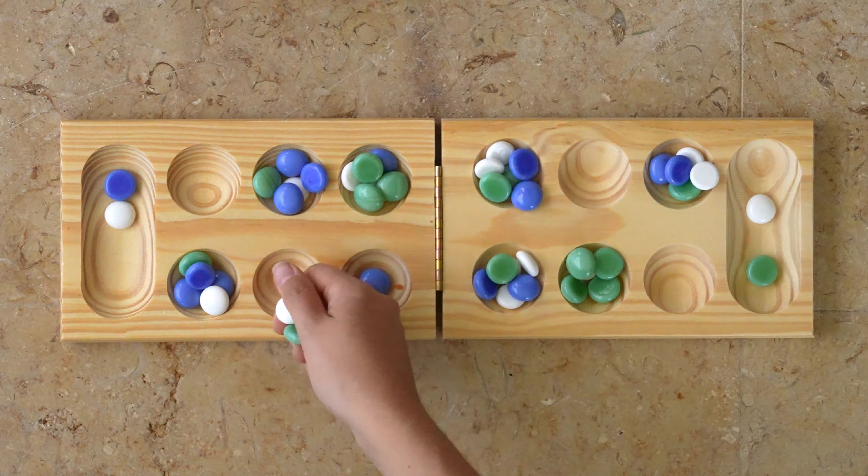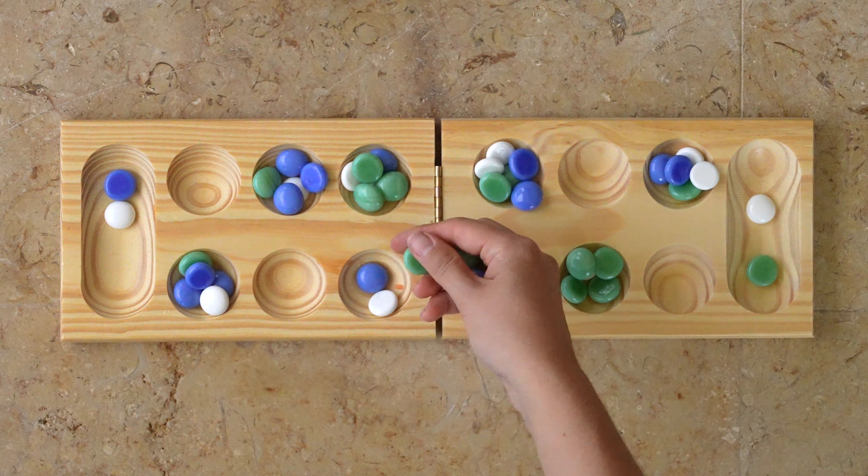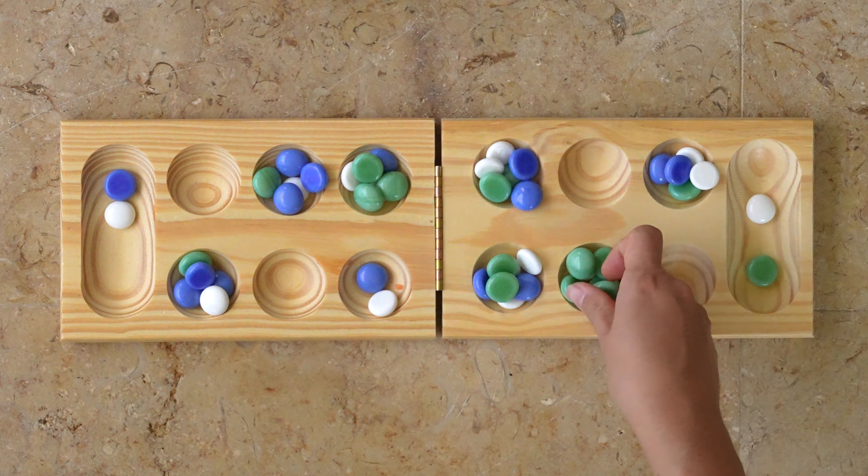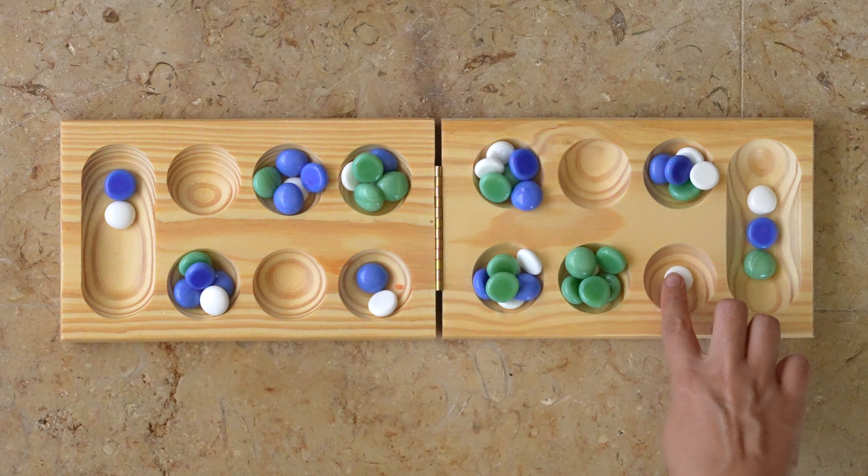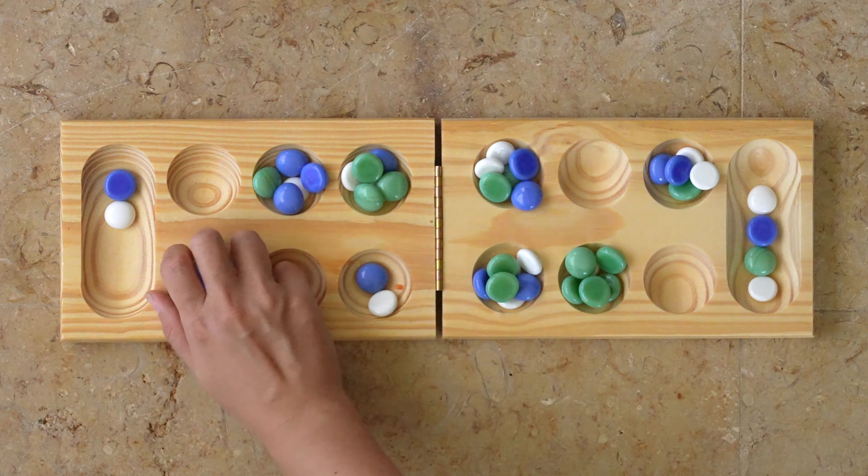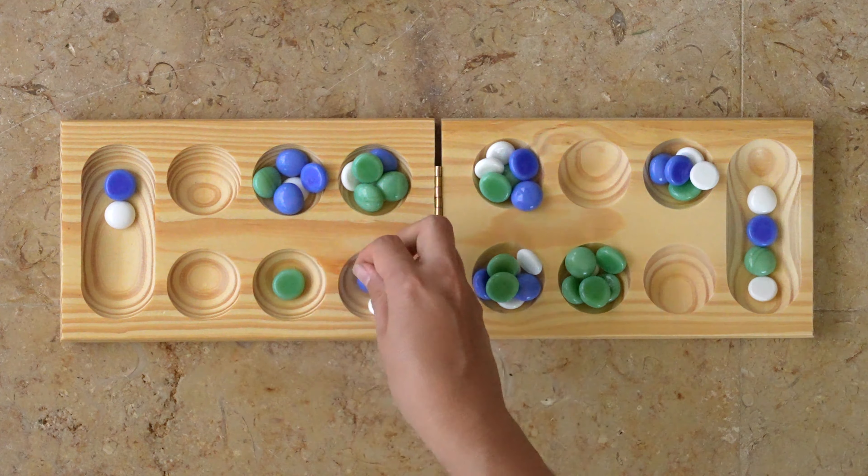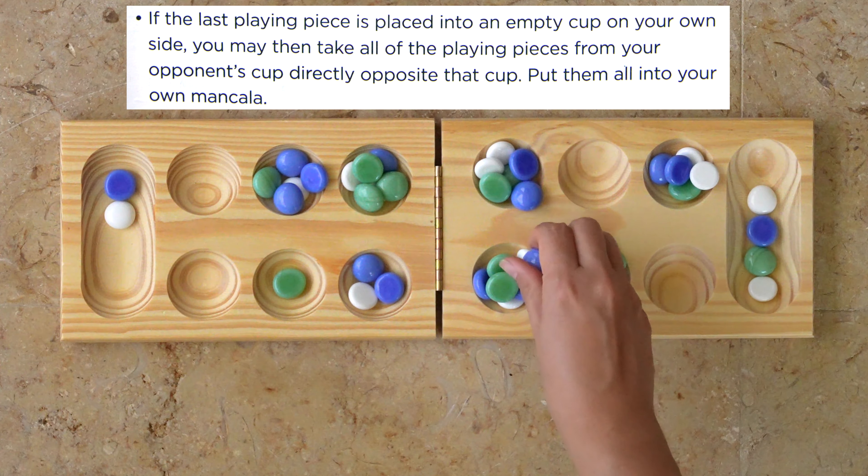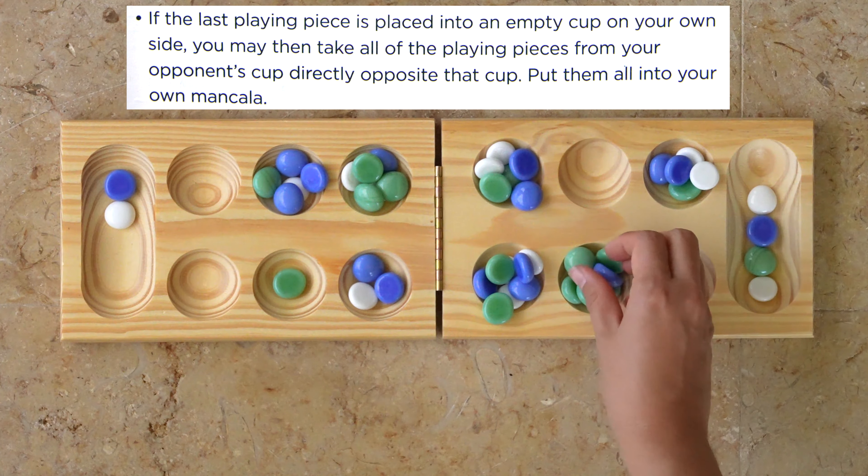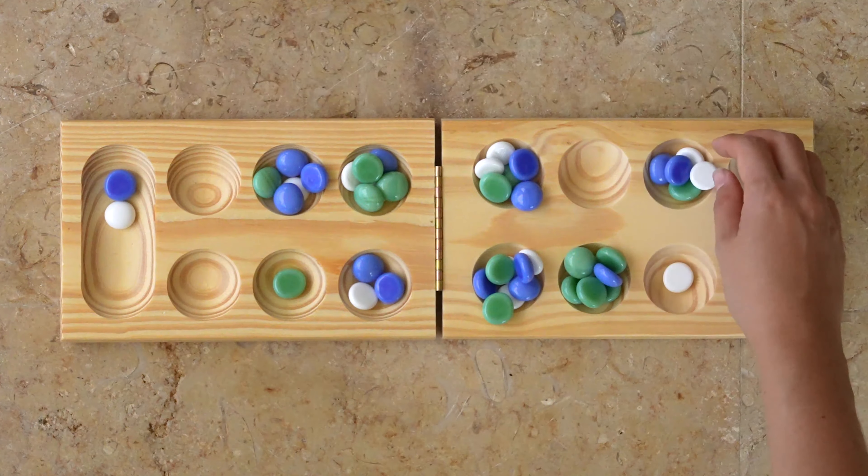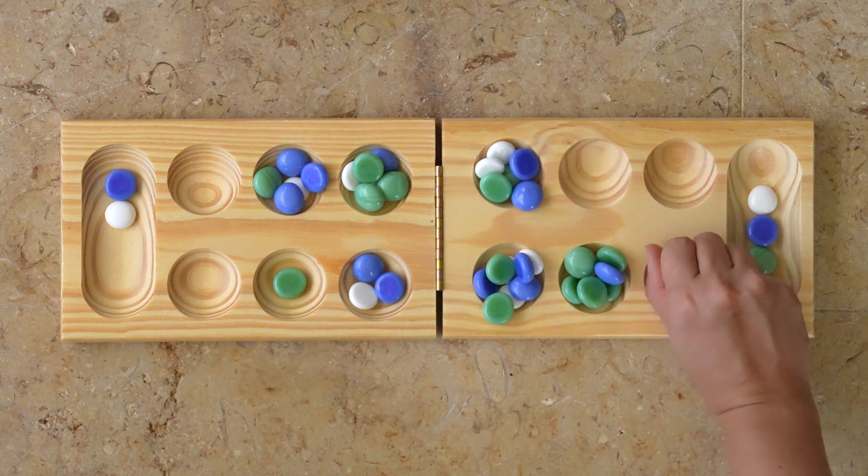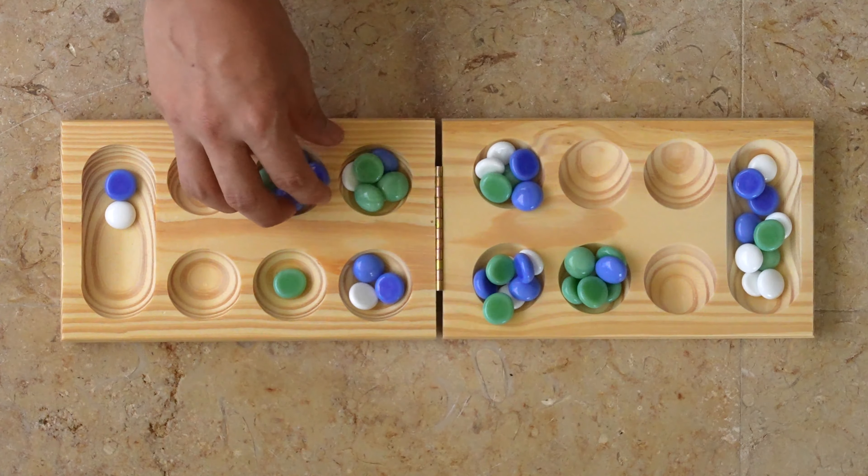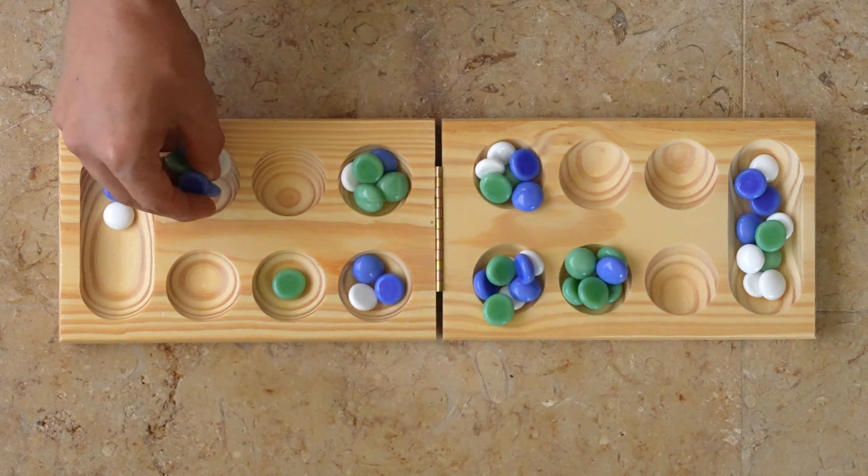And here is my favorite part of the game. You can steal pieces from the other player. Here is how it works. If your last playing piece is placed into an empty cup on your side, you may then take that marble and all of the marbles from your opponent's cup, which is across from you and put them into your Mancala. If the opposing cup has no marbles in it, then nothing happens.